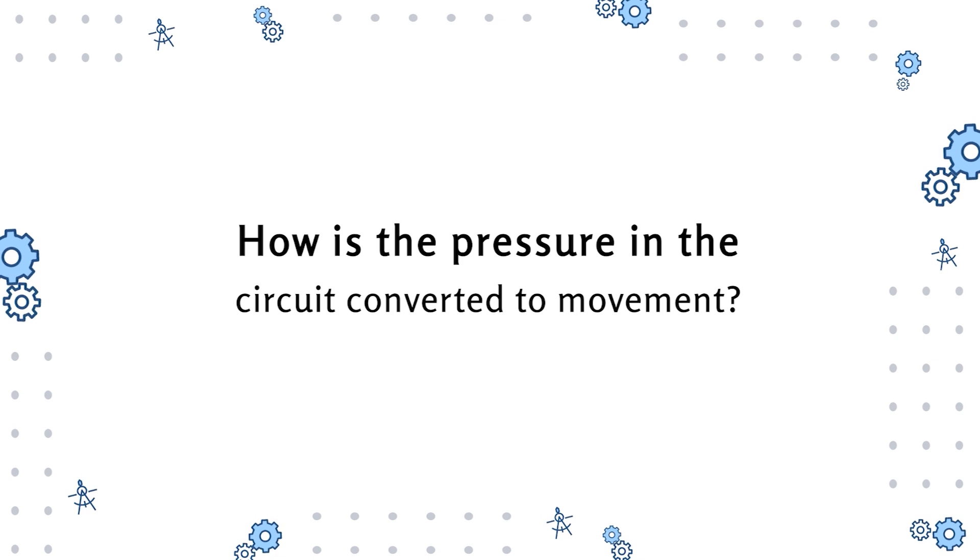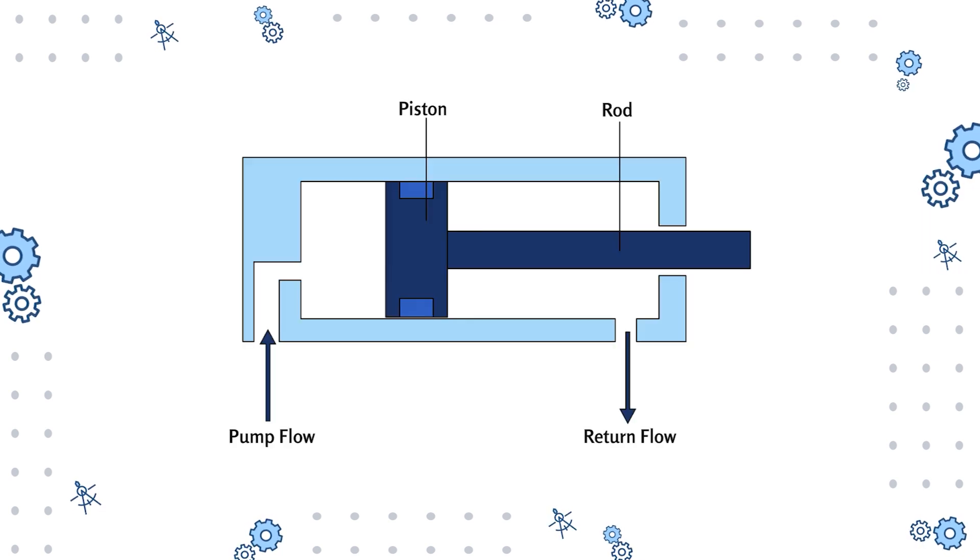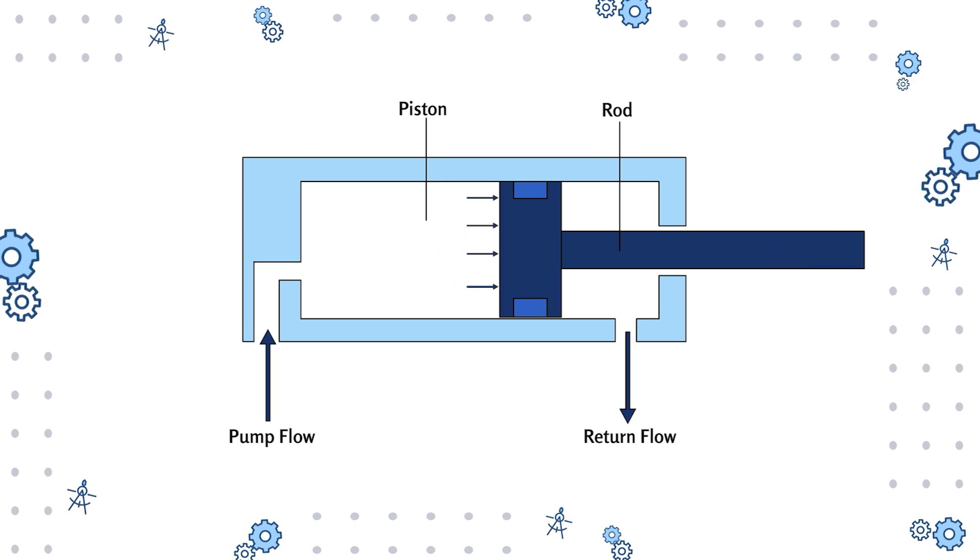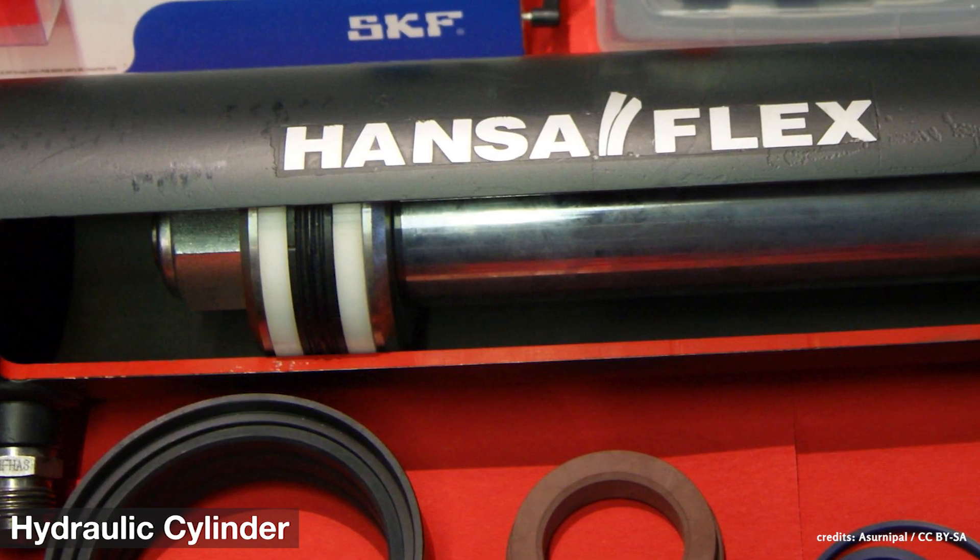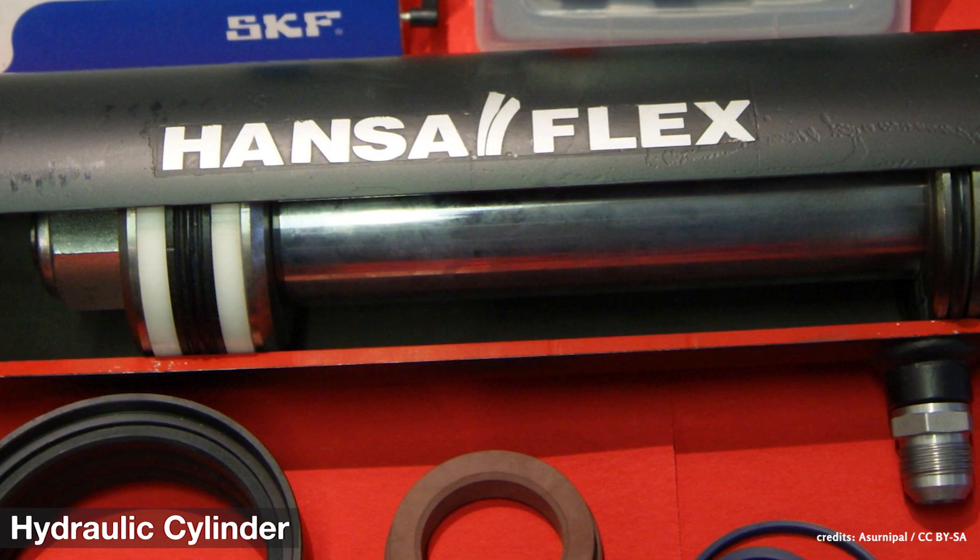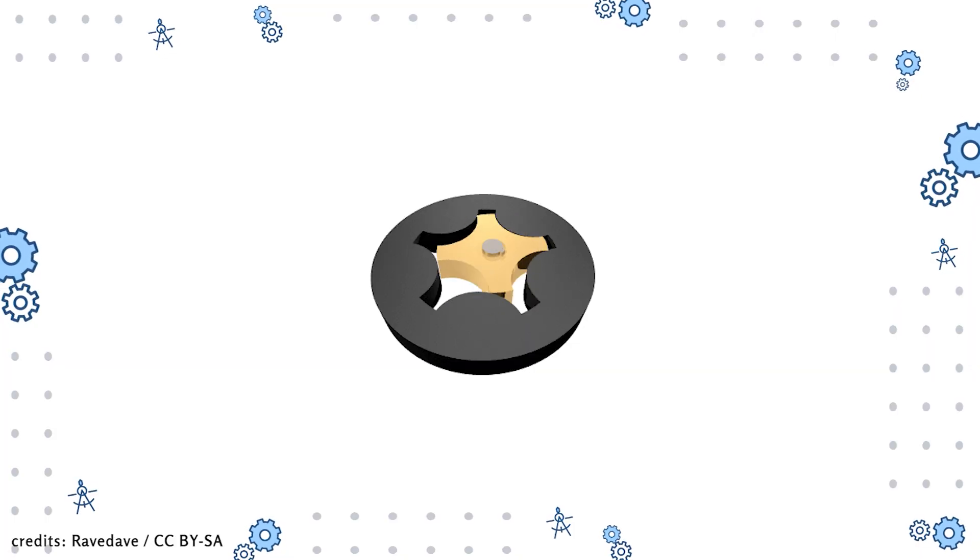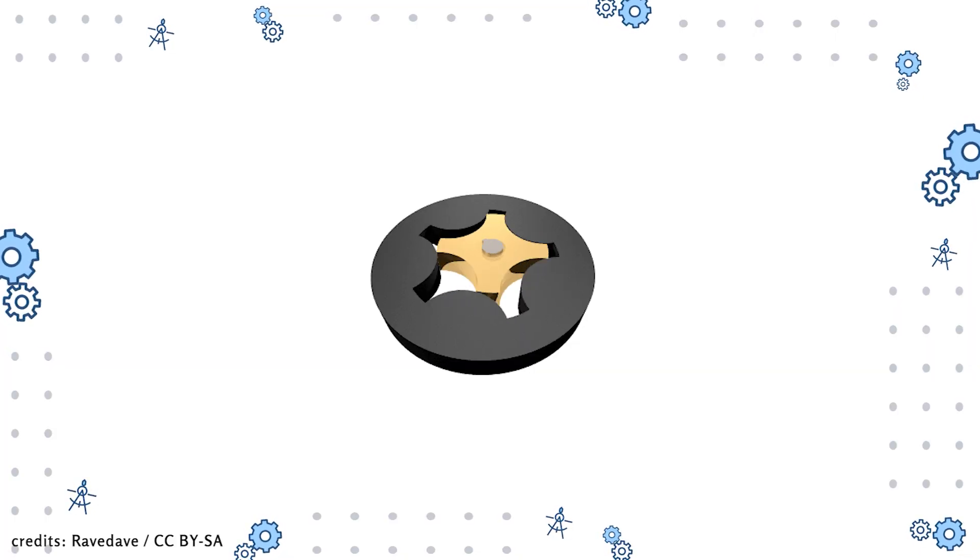But how is this pressure converted into mechanical movement? Well, that's what actuators are used for. An actuator converts the pressure into mechanical force or torque depending on the requirement. A linear actuator, such as a hydraulic cylinder, provides linear motion, while a hydraulic motor is used to provide rotary motion.